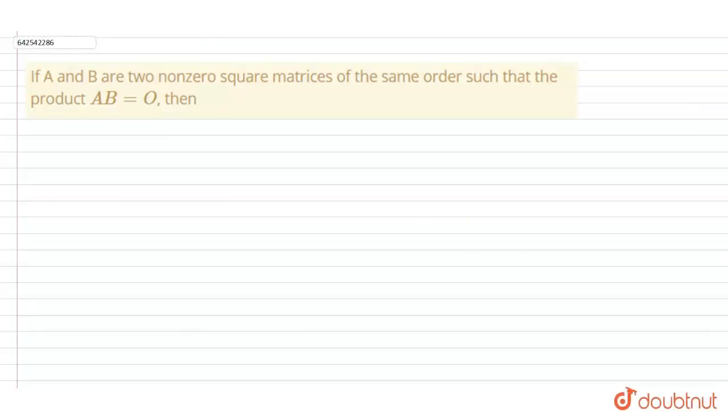Here, the question given is: if A and B are two non-zero square matrices of the same order such that the product AB equals O, then we have to find what will happen. Let's begin here.